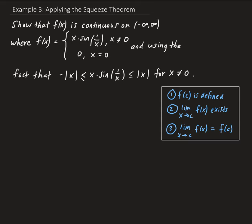In this example, we want to show that our function, given here, is continuous on the entire real line — that is, from minus infinity to infinity. We are also given that x times sine(1/x) is bounded between the negative absolute value of x and positive absolute value of x.